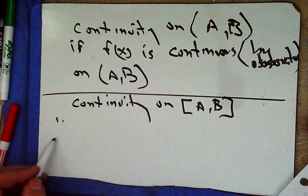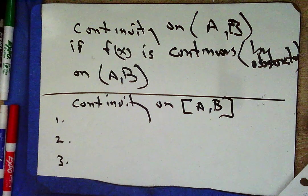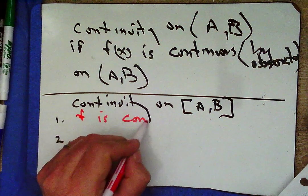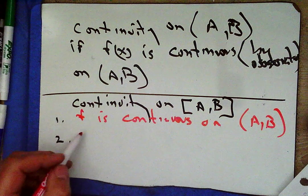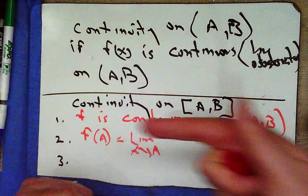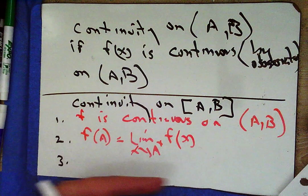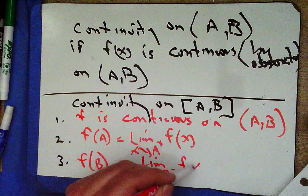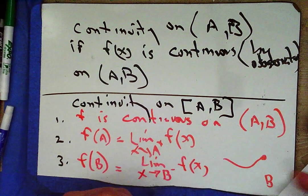Pause the video and write down the three things needed for continuity on the closed interval. You should have: f is continuous on the open interval from a to b; f of a equals the limit as x approaches a from the positive side; and f of b equals the limit as x approaches b from the negative side — because nothing exists on the positive side of b.